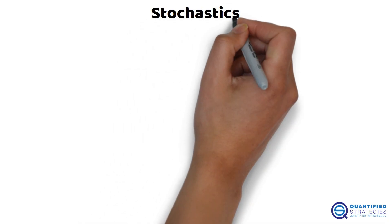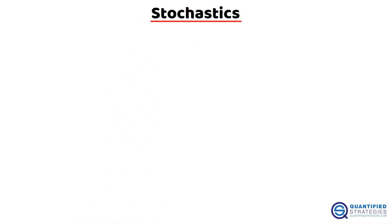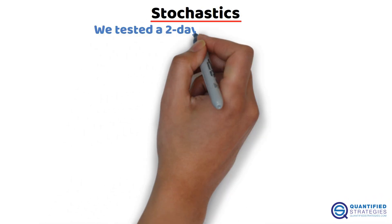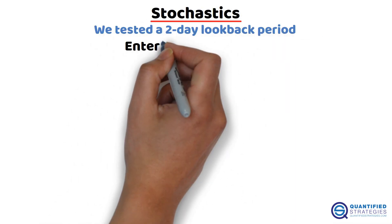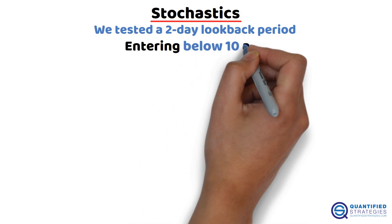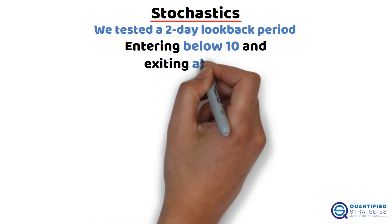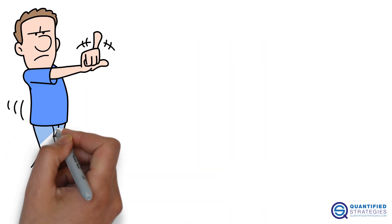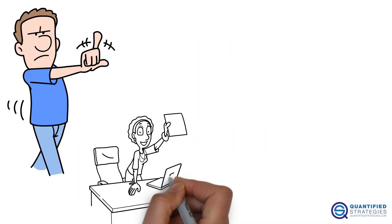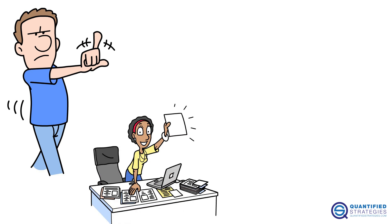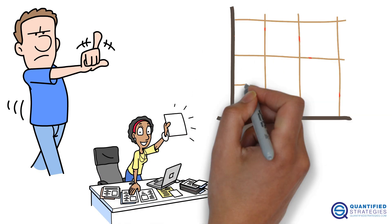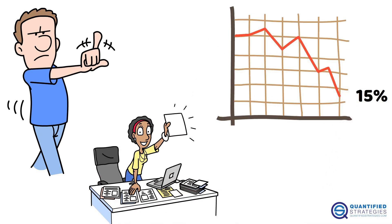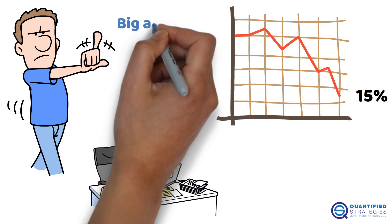Moving on to Stochastics, we tested a two-day lookback period, entering below 10 and exiting above 70. It doesn't trade often, but the results are impressive. Maximum drawdown was only 15% — that kind of smoothness is rare, and it's a big advantage.